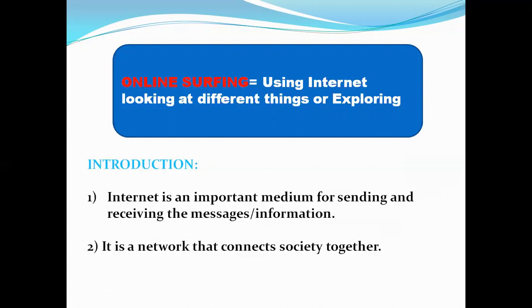We all are doing this in our everyday life. Internet is a network that connects society together. Using the internet, people can connect with other people — like I am right now communicating with you through this video. Same way, using the internet, one can connect to another person. When many people do this together, they form a society. So we can simply say that internet is a network that connects people across the globe and connects society together.